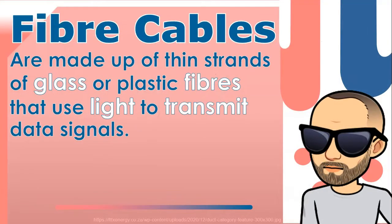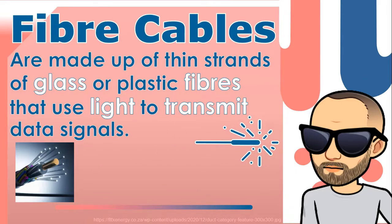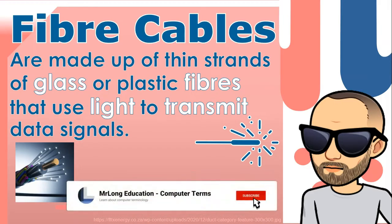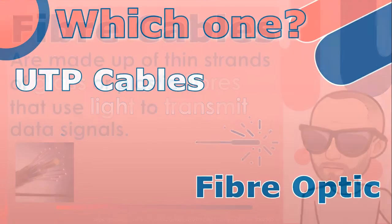Fiber cables, also known as fiber optic cables, are used for transmitting data over long distances. They are made of tiny strands of glass or plastic fibers that use light to transmit data signals. The fibers are surrounded by protective cladding, and lasers generate pulses of light that represent a one or a zero.